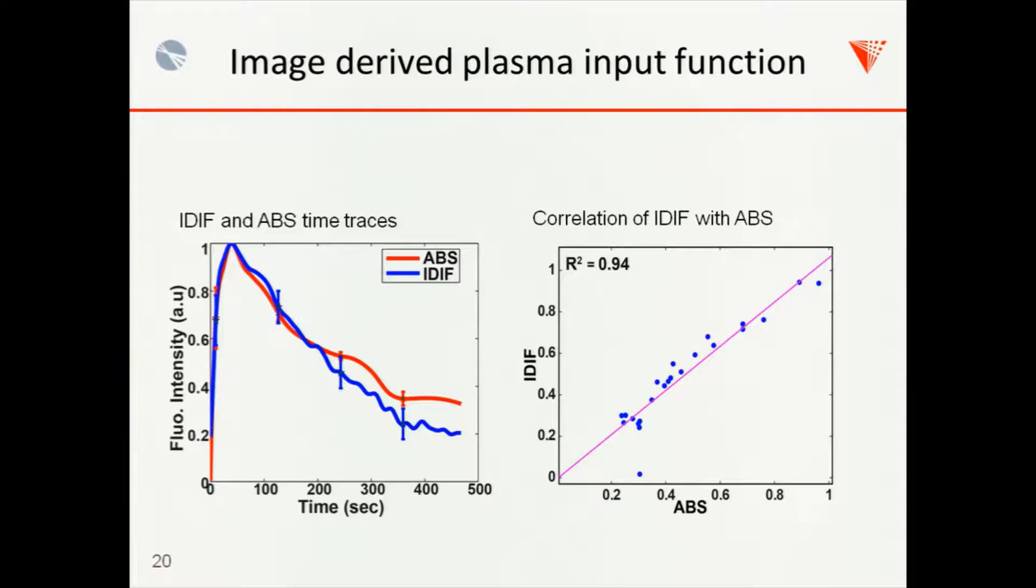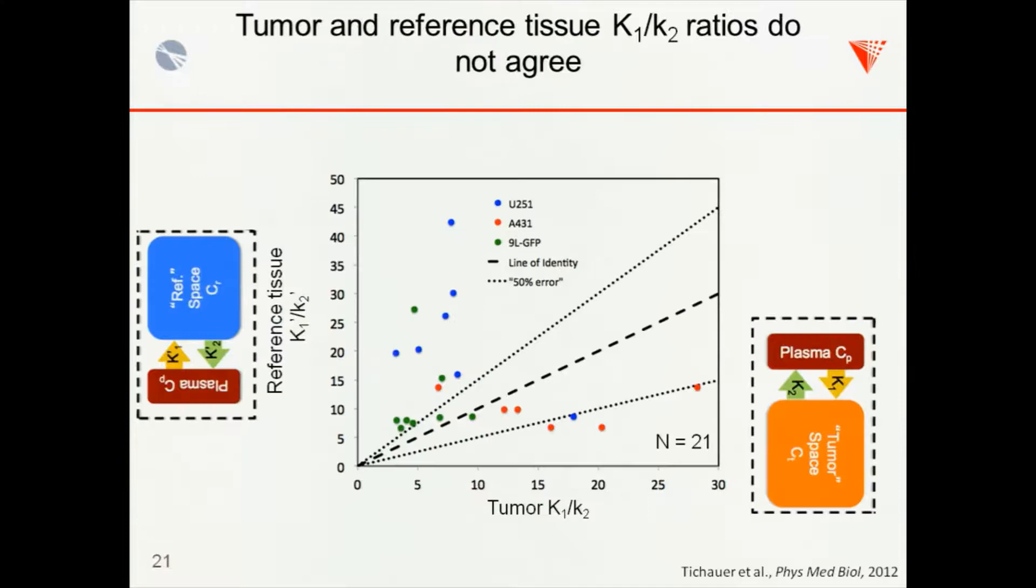Okay, so that is the plasma input function. One other advantage that I mentioned with optics is that it's very easy at least, to measure multiple tracers at the same time. And with that, you can apply some interesting tricks. So as Professor Lammertsma mentioned, his reference tissue approach is where you don't have to measure a plasma input function. They're really useful in some cases. However, things like tumors are very difficult to apply this to. And he did mention this, but you may have missed it.